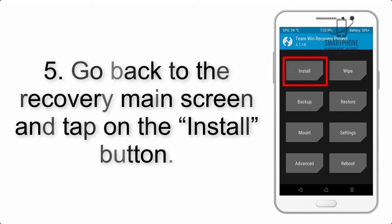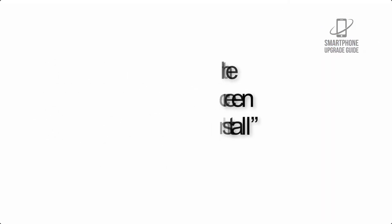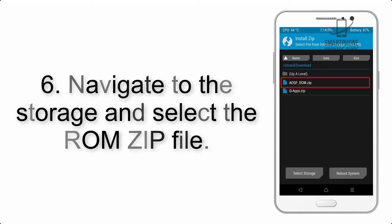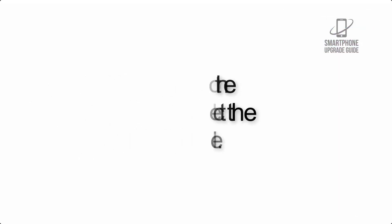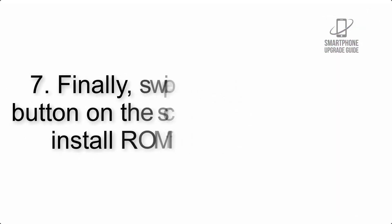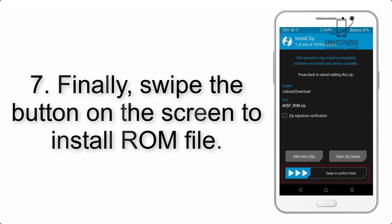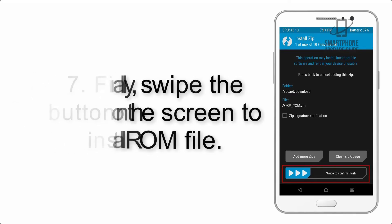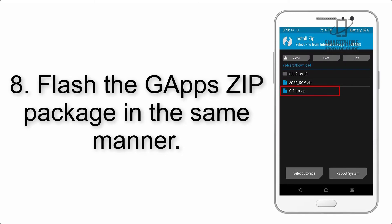Step 5: Go back to the recovery main screen and tap on the Install button. Step 6: Navigate to the storage and select the ROM zip file. Step 7: Finally, swipe the button on the screen to install the ROM file.